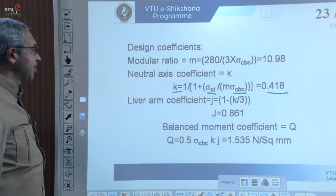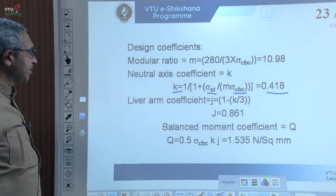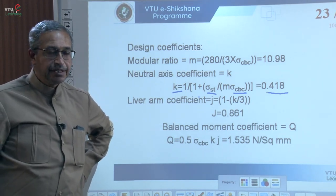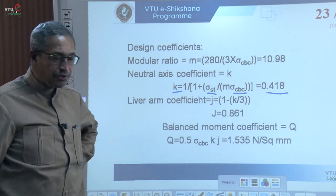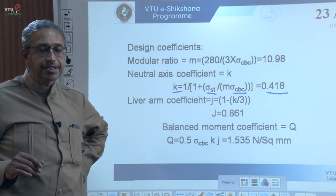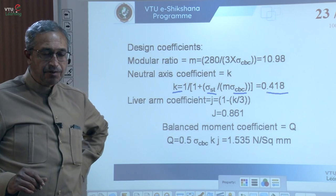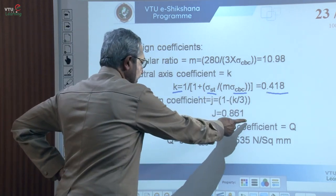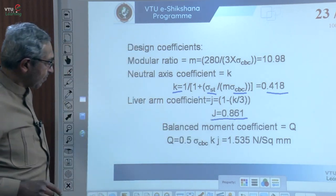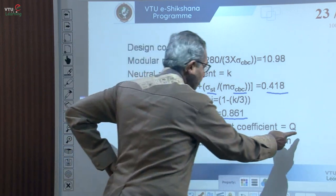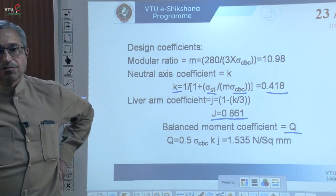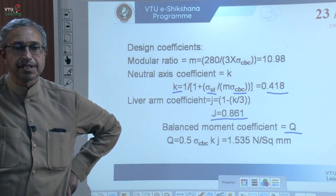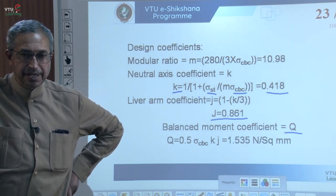Next, lever arm coefficient J gives the exact distance between the resultant compressive force and tensile force in the flexural section. Substituting the neutral axis coefficient, J is obtained as 0.861. For the balanced section, the permissible stresses in both concrete and steel reach their permissible values simultaneously. In an under-reinforced section, the permissible stress in steel is reached earlier.